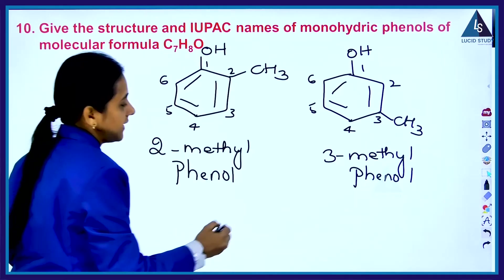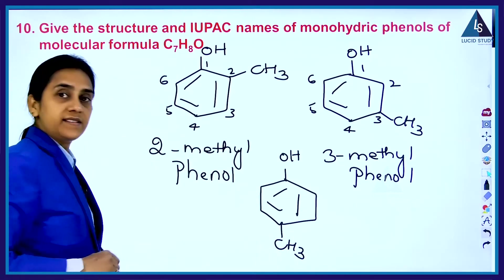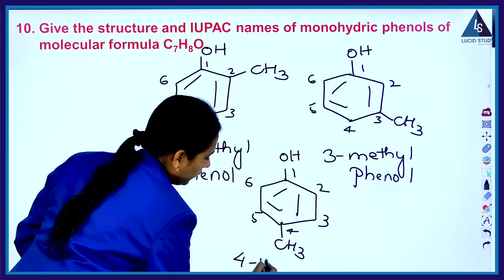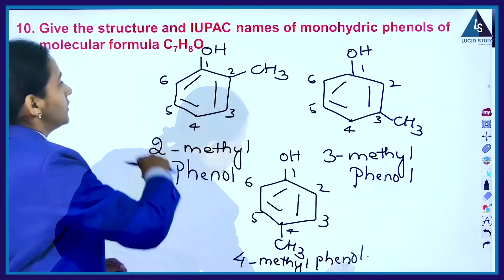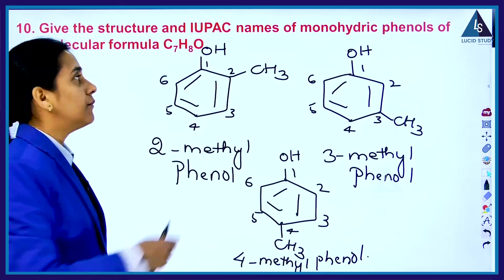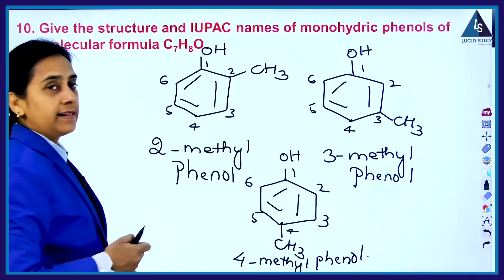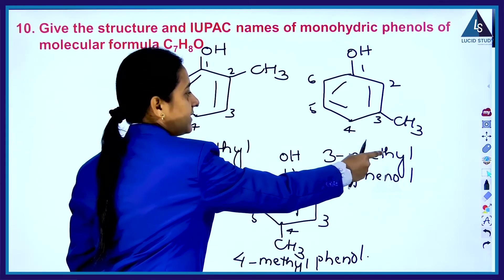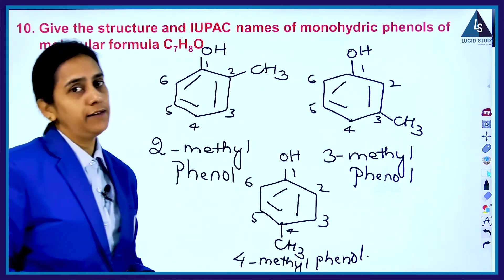You just look at what position the methyl group is present, in the third position, so it will be 3-methyl phenol. And the last, phenol with CH3 at the fourth position, it is 4-methyl phenol. So these are some of the monohydric phenols and the IUPAC names: 2-methyl phenol, 3-methyl phenol, and 4-methyl phenol.